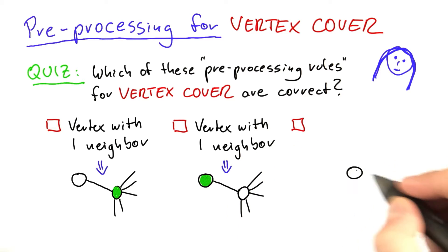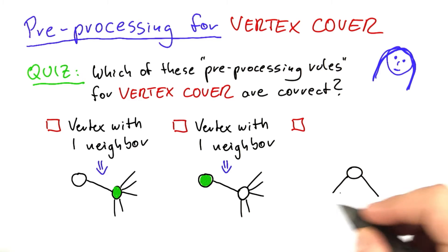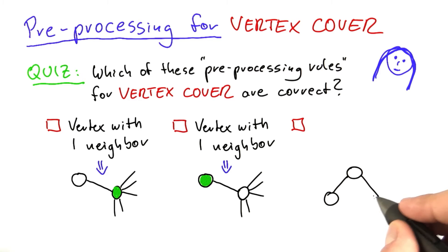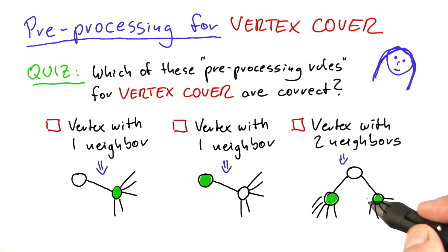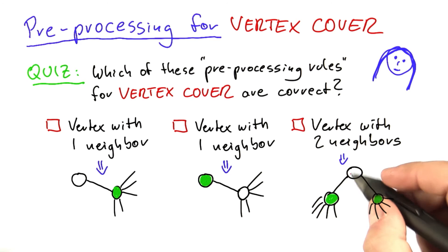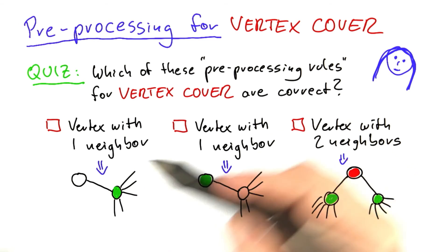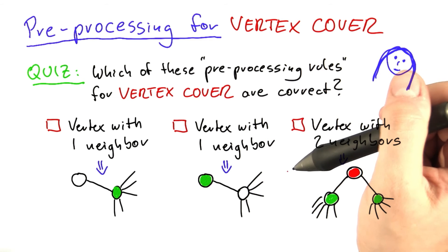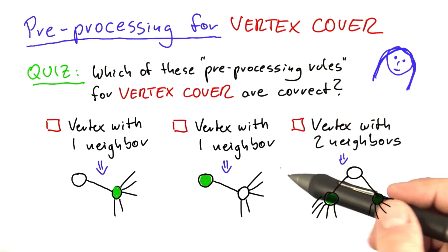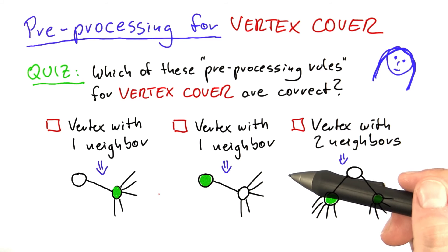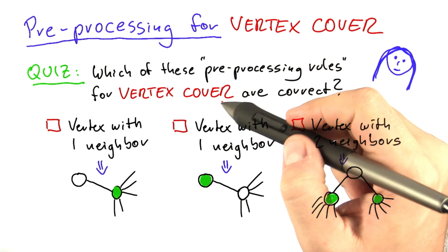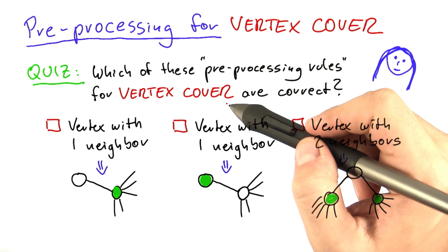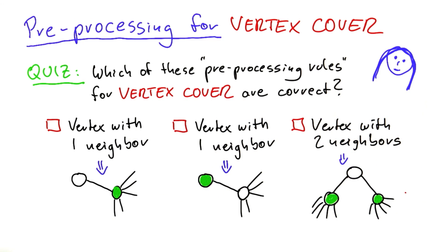As a third case, if we have a vertex that has just two neighbors, should we then have the preprocessing put these two vertices into the vertex cover, which would also mean that you do not need to have this one in here? Please check all of the rules here that are correct, meaning they do not affect the solution we're going to find in the end. Having applied this rule, we can still find the smallest possible vertex cover for the whole graph.